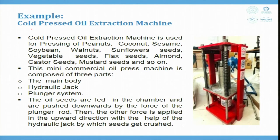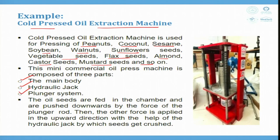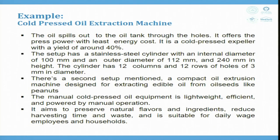A cold-pressed oil extraction machine was developed for pressing peanuts, coconut, sesame, soybean, walnuts, sunflower seeds, vegetable seeds, flax seeds, almonds, castor seeds, mustard seeds, and more. This mini commercial oil press is composed of three parts: main body, hydraulic jack, and plunger system. Oil seeds are fed into the chamber, pushed downward by the plunger rod, and then an upward force from the hydraulic jack crushes the seeds. Oil spills out through holes to an oil tank — yield is around 40 percent, meaning 1 kg of seeds produces 400 grams of oil.